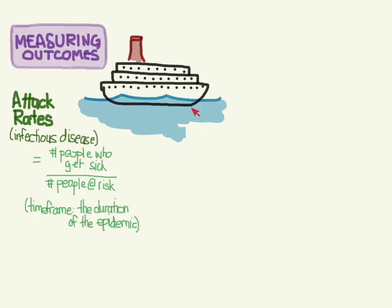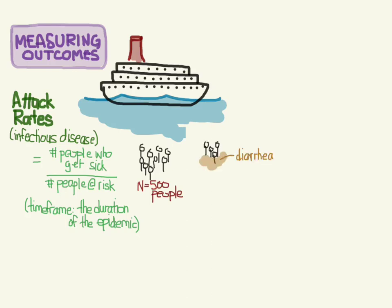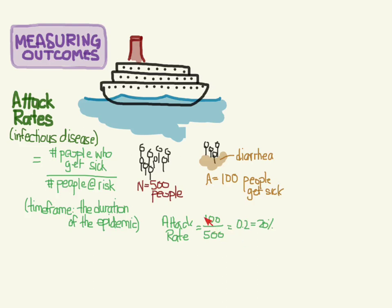For example, consider a cruise with 500 people on the ship. Some of those 500 people ate some food that tasted bad and ended up getting diarrhea. Let's say 100 people got diarrhea, which means 400 people were fine. So we get 100 over 500, which is one-fifth, equivalent to 20%. That's our attack rate for the duration of the epidemic.